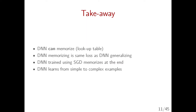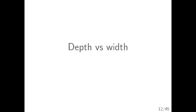Takeaway from this first section: deep networks can memorize, like a lookup table, and when memorizing we have the same loss value. There is a very natural question: why does SGD pick a network or solution that generalizes? We observed that deep networks trained using SGD memorize at the end. If you give a network both random-label examples and true-label examples, SGD will mostly ignore the random labels in the beginning. Deep networks learn from simple to complex examples.